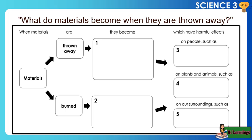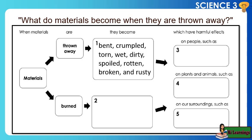Let's focus on the top part of the chart first. When materials are thrown away, they become bent, crumpled, torn, wet, dirty, spoiled, rotten, broken, and rusty.